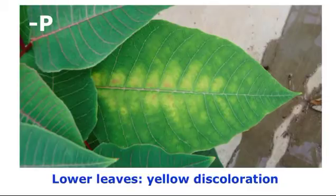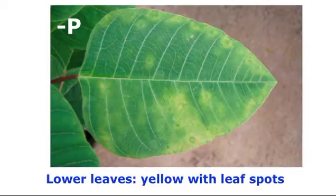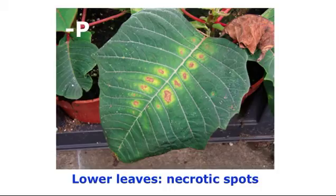With warm growing conditions, the symptoms are different. On the lower leaves, a yellow discoloration develops. Over time, the yellowing will expand and leaf spotting can occur. Many of the leaf spots also have a dark green center. With severe symptoms, the yellow areas can turn necrotic.